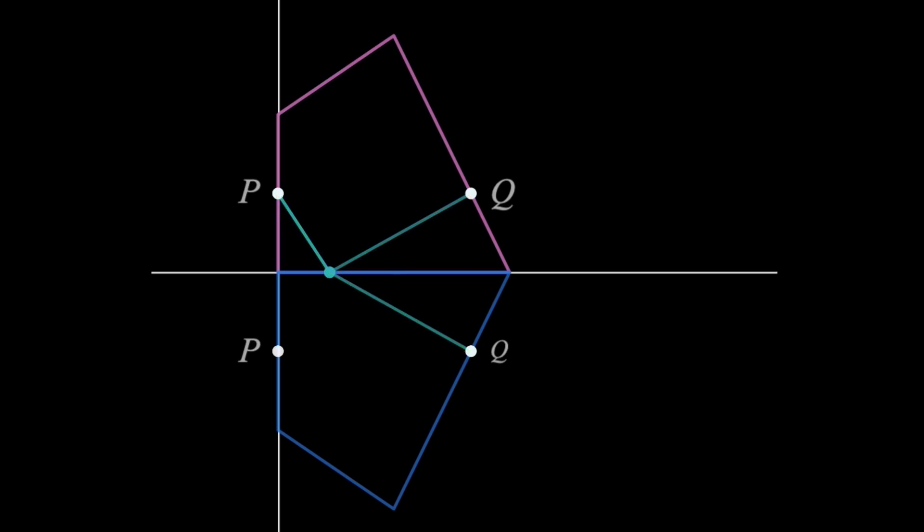And as we move X around, it's obvious that the shortest total path will occur when we have a straight line from P to this lower Q. Which means this here is the shortest path that we were looking for.